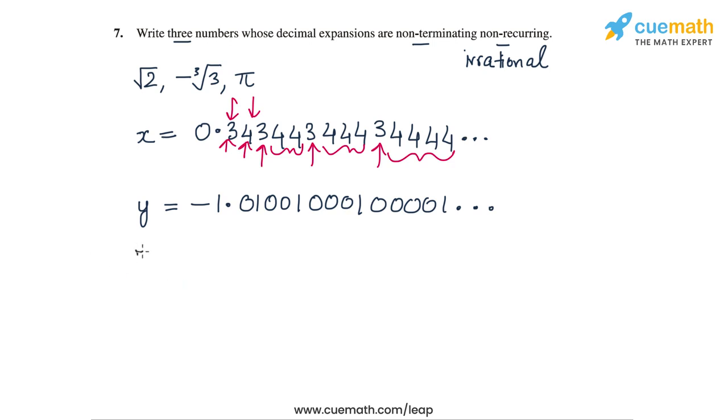And then let's take z as say 5.71, 771, 7771, 77771 and so on.